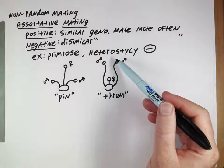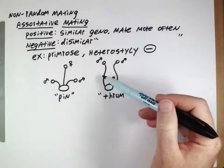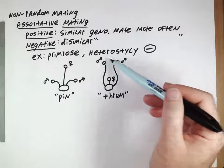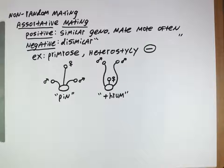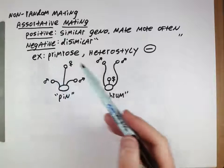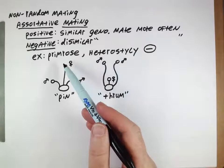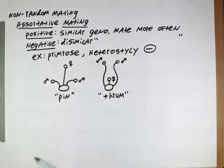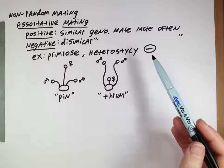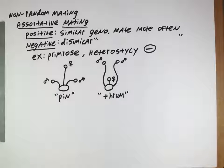On the other hand, pollinators that stay at a distance, like hummingbirds whose beaks drink nectar, will have their bodies further away and will pick up pollen from the thrums. When they go to another thrum, they'll just be getting more pollen. It's only when they go to a pin that they'll be transferring that pollen to the female part of the flower. So those pollinators will be taking gametes from thrum to pin. This results in negative assortative mating because it causes pin individuals to mate with thrum individuals much more than they mate with the same phenotype.